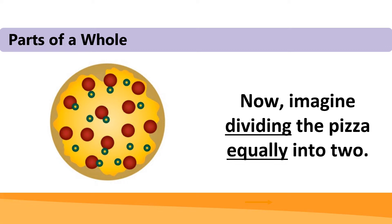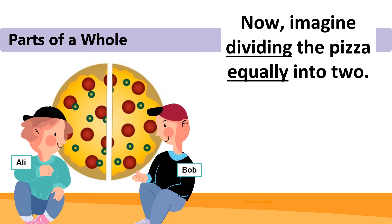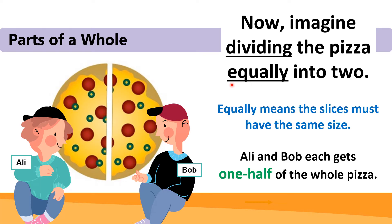Now we imagine dividing the pizza equally into two parts, like this. Let's have Ali and Bob in the picture. So two slices and two people. When you want to divide equally, it has to have the same size, so that Ali gets the same size as Bob. Now we can say Ali and Bob, each of them, gets one half of the whole pizza.